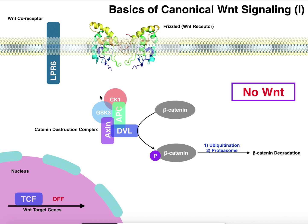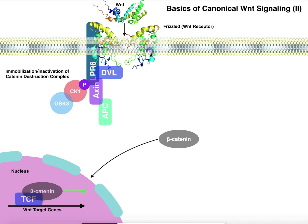As long as this beta-catenin destruction complex is floating around in the cytoplasm, it's going to keep phosphorylating beta-catenin and keep those Wnt target genes off. But something different happens when we actually have Wnt. The Wnt protein binds to the Frizzled receptor and also recruits the co-receptor LRP6. Notice that this entire beta-catenin destruction complex is inactivated and immobilized to the Wnt receptor and LRP6. The complex rearranges itself, and GSK3 and CK1 interact with LRP6 and can no longer bind to beta-catenin.